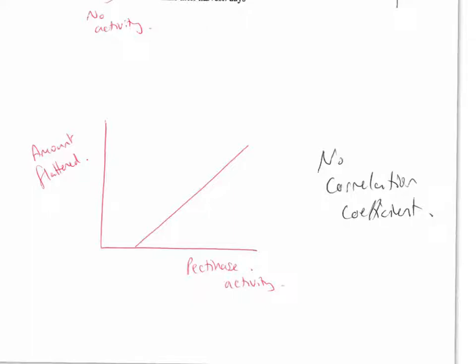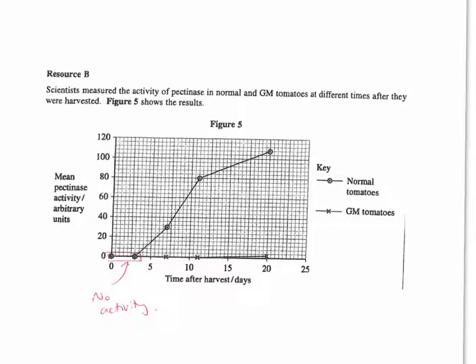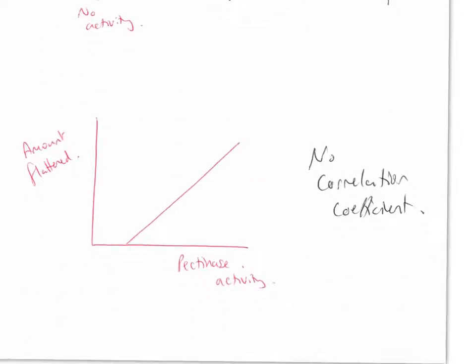Also, if you look at the graph on here, there's no standard deviation bars, so we don't know if the difference in pectinase activity is significant between each time period or between GM. There's also no statistical test used, so we cannot see if the correlation between pectinase activity and the amount that the tomatoes flattened is significant, so there's no correlation coefficient used.